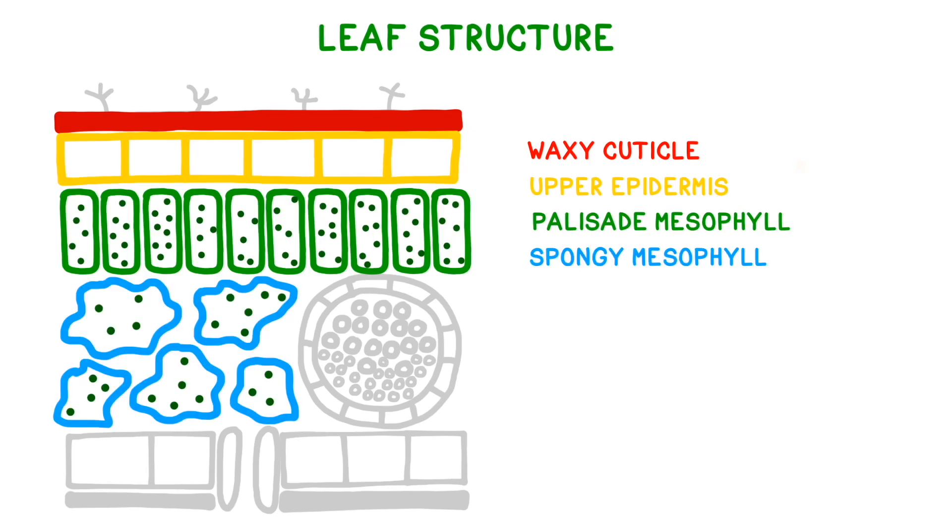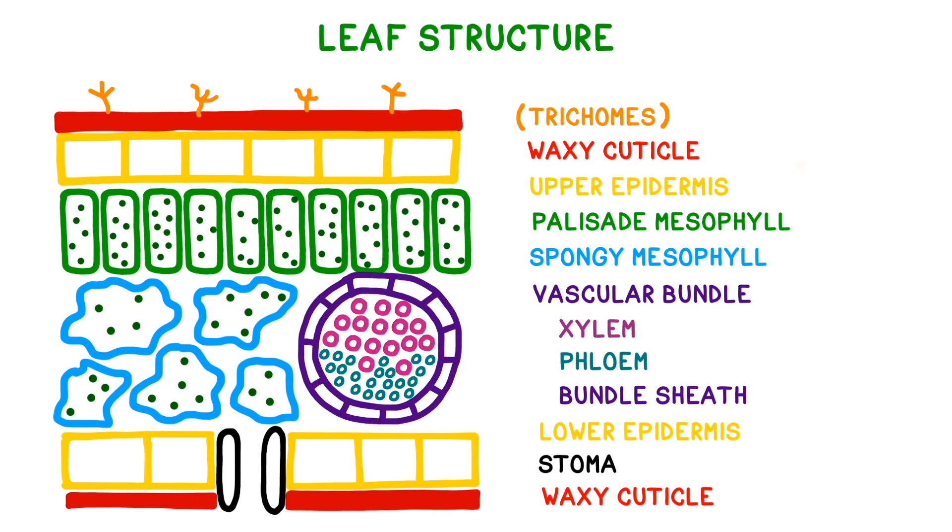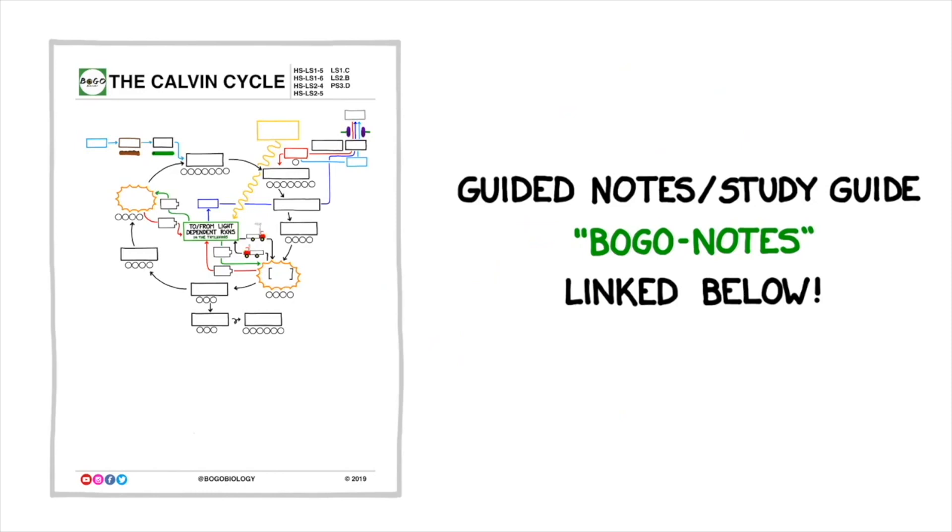Plants come in all shapes and sizes and their leaves have many interior structures that each have a specific function. This video will cover the structure and function of the interior of a leaf and connect the relevant parts back to the process of photosynthesis. If you'd like a little extra review, be sure to check out the study guide in the video description.